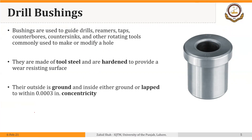The outer diameter is ground, and the inner diameter is either ground or lapped to within 0.0003 inch concentricity. The inner diameter must be concentric with the outer diameter, and since concentricity is a geometric feature, there is a tolerance for it — as a rule of thumb, it should be within 0.0003 inches.